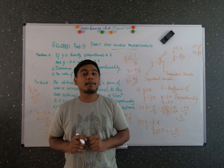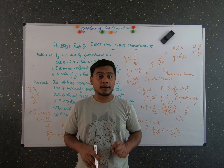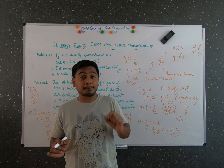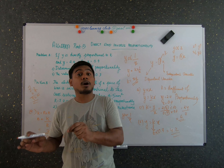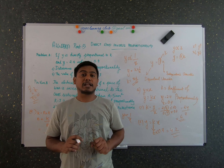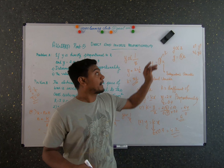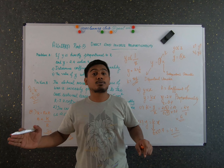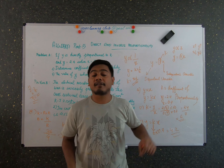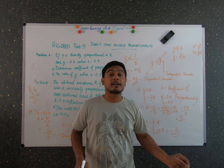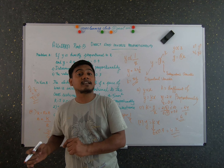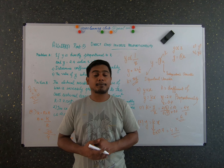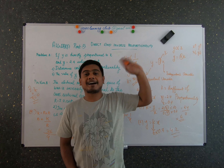So that's all about inverse and direct proportion. For inverse proportion, whenever there is an increase in the independent variable it leads to a decrease in the dependent variable, or vice versa. But in direct proportion, when there is an increase in the independent variable it leads to an increase in the dependent variable, and whenever there is a decrease it leads to a decrease. See you in my next video. Bye bye.